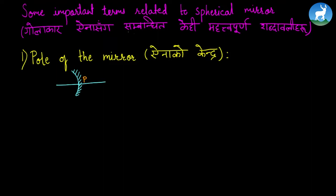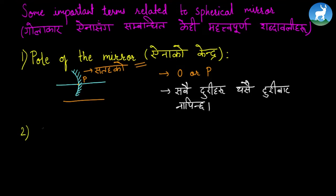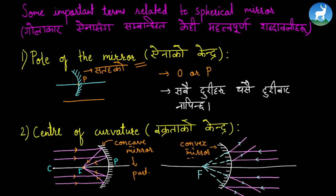The pole of the mirror is the center point, marked as O or P. The distance measured from this point is related to the second term — Center of Curvature (Bakratako Kendra) — for concave mirror or convex mirror.